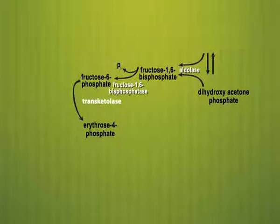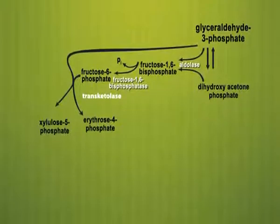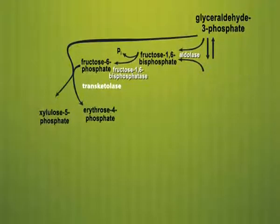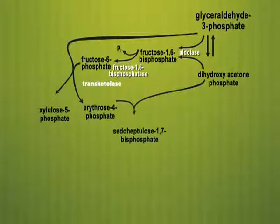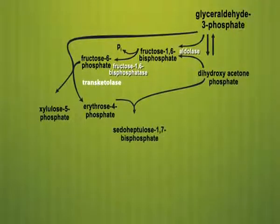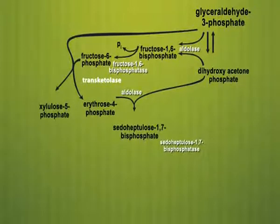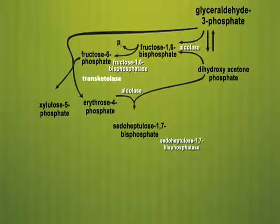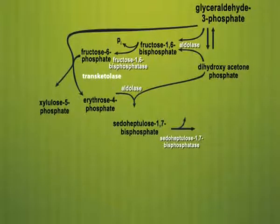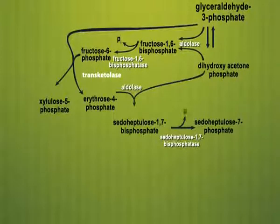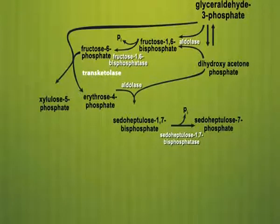The two carbons on transketolase are added to a G3P to produce xylulose 5-phosphate (Xu5P). Erythrose 4-phosphate and a DHAP are converted into sedoheptulose 1,7-bisphosphate — a 7-carbon sugar — by the enzyme aldolase. Sedoheptulose 1,7-bisphosphatase, one of only three enzymes of the Calvin cycle unique to plants, cleaves sedoheptulose 1,7-bisphosphate into sedoheptulose 7-phosphate, releasing an inorganic phosphate into solution.